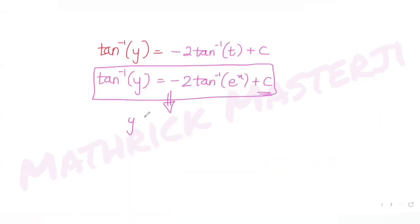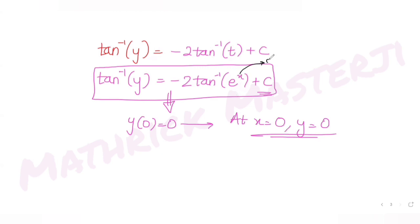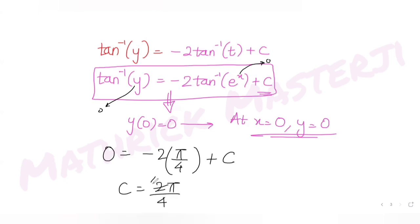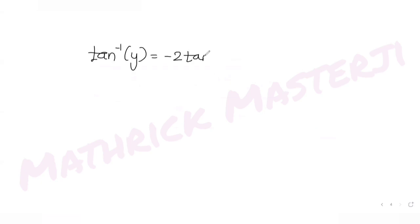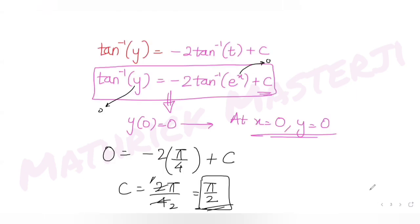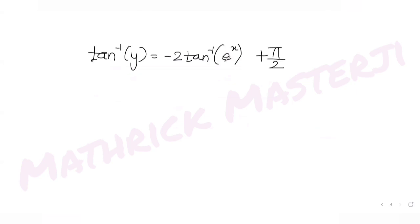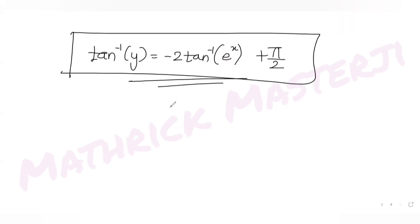Substituting x = 0 and y = 0: tan⁻¹(0) = -2·tan⁻¹(e⁰) + C, so 0 = -2·tan⁻¹(1) + C = -2·(π/4) + C. Therefore C = π/2. The solution is: tan⁻¹(y) = -2·tan⁻¹(e^x) + π/2.